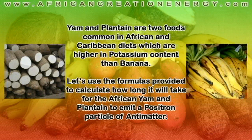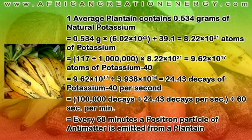Yam and plantain are two foods that are common in African and Caribbean diets, which are actually higher in potassium content than banana. We're going to use the previous formulas to calculate how long it will take for the African yam and plantain to emit a positron particle of antimatter. The average plantain contains 534 milligrams of natural potassium. When we do our calculation, we get 8.22 times 10 to the 21 individual atoms of potassium in the average plantain. Of those, 9.62 times 10 to the 17th atoms are potassium-40.